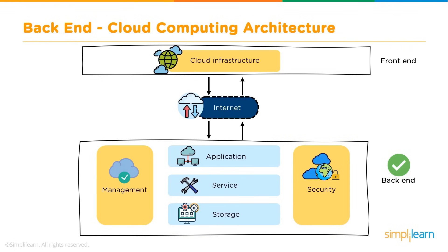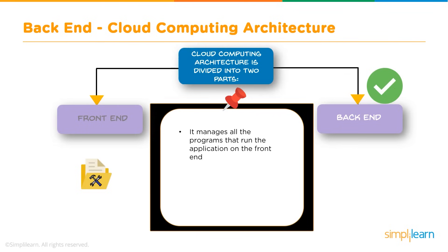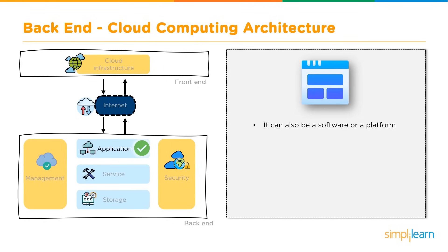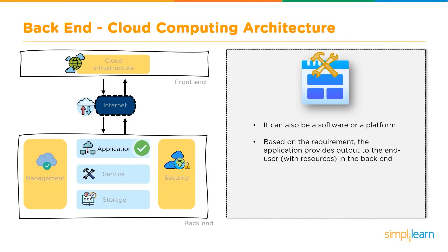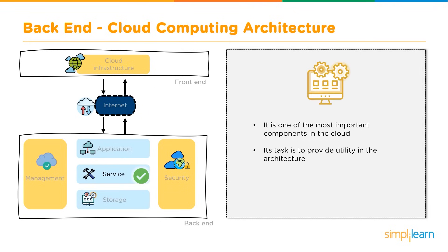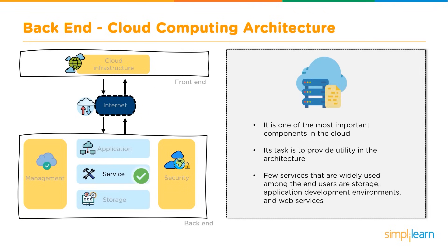The back-end manages all the programs that run the application on the front-end. Whatever is required to support the applications — for example, web applications running on the front-end — is available in the back-end. It comprises the entire infrastructure of a cloud provider and can be software or a platform. It is one of the most important components in the cloud — the backbone of cloud computing architecture — and its widely used services include storage, application development environments, and web services.